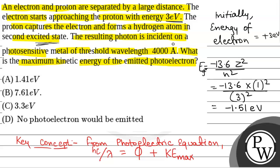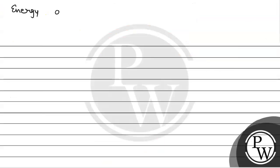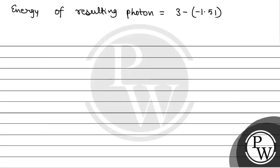So the energy of the resulting photon will be equal to 3 minus of minus 1.51 electron volt — that is initial energy minus final energy — so that will be equal to 4.51 electron volt. This is the energy of the resulting photon.